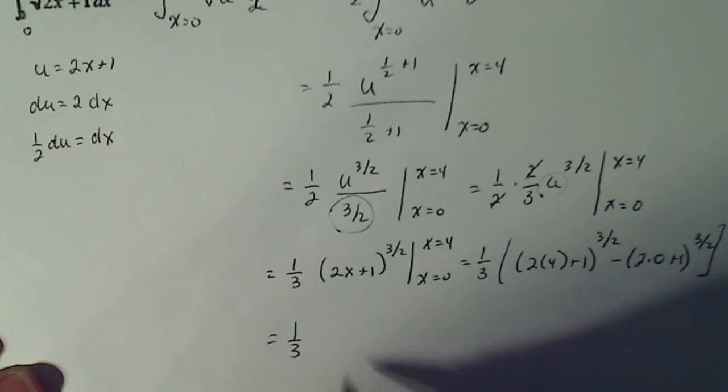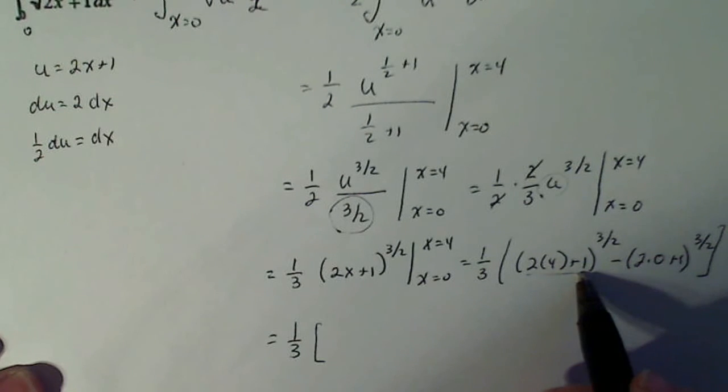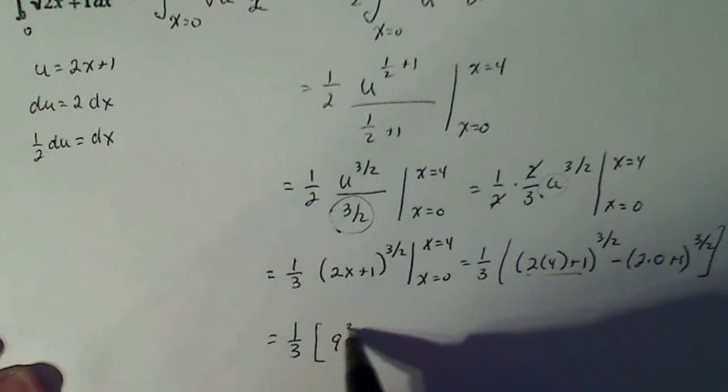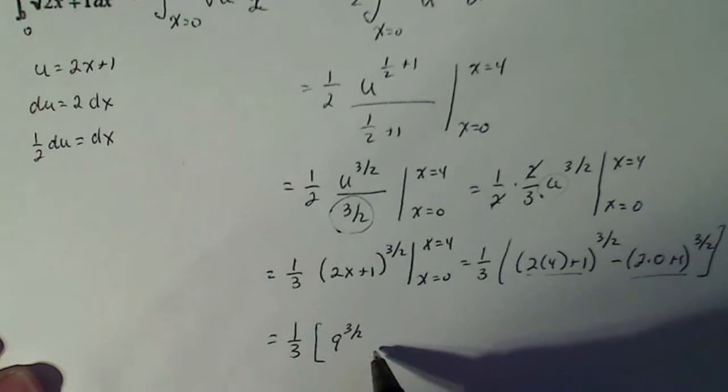That's equal to one third times, let's see, this is 9 to the three halves. This is 1 to the three halves.